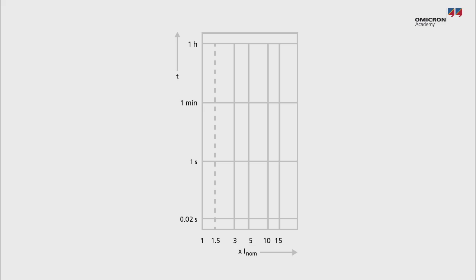MCB tripping characteristics show a thermal trigger for overloads and a magnetic trigger for short circuits. Different tripping characteristics for MCBs exist, such as D or C, with B being the type most commonly used. For instance,